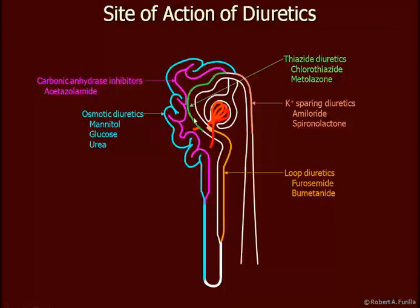Thiazide diuretics in the distal tubule, potassium-sparing diuretics, spironolactone, amiloride, work here in the late distal tubule and early collecting duct. And here we're seeing the loop diuretics. Furosemide, for example, works in the ascending limb of the loop of Henle.